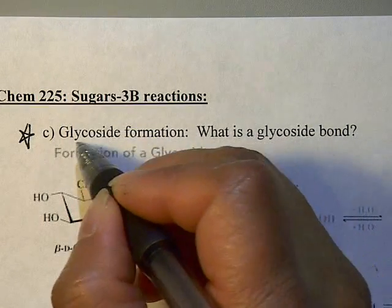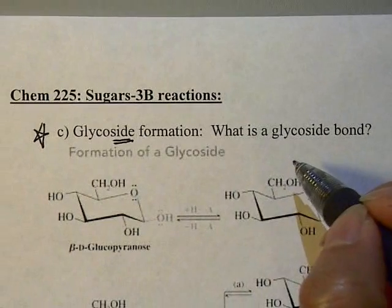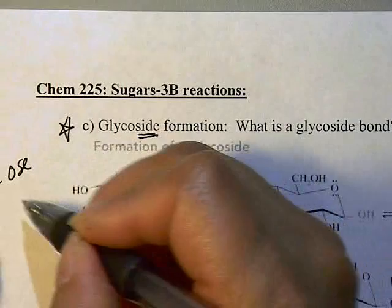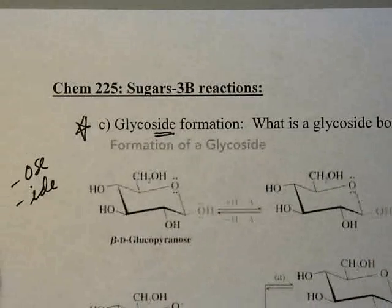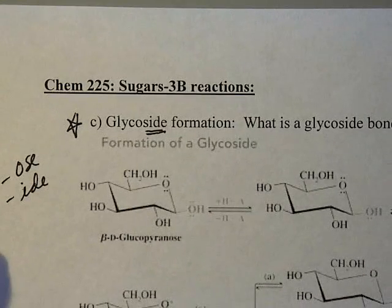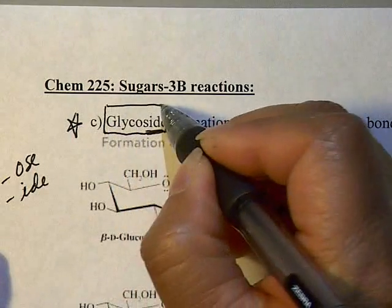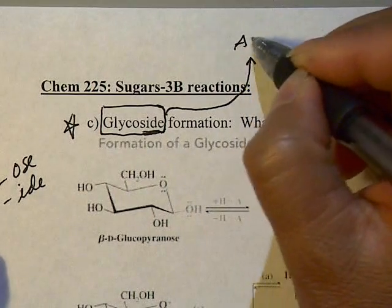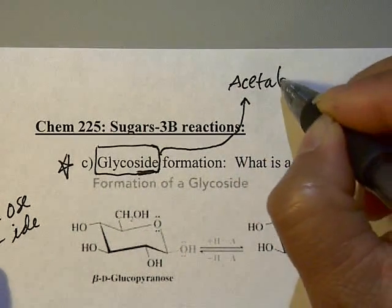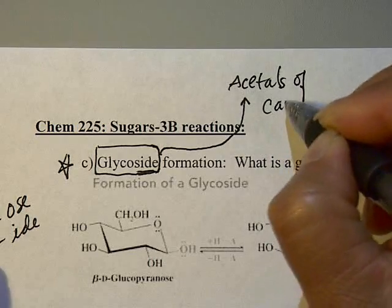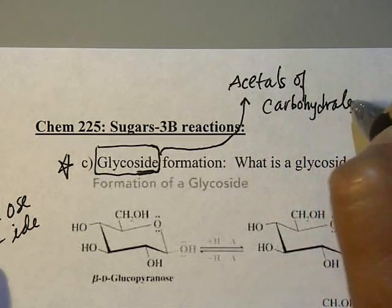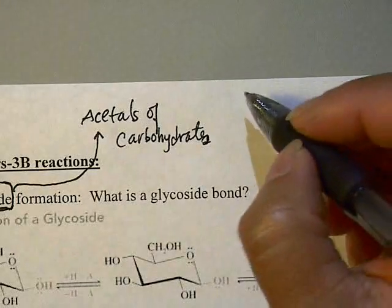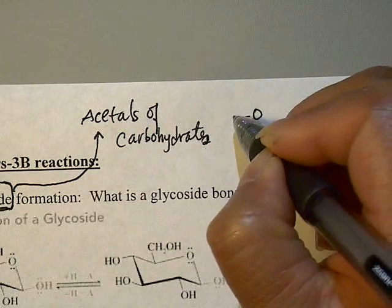Whenever you talk about a glycoside — notice the '-ide' ending, not '-ose' — you're referring to a specific compound. When you go from glucose (an '-ose') to a glycoside (an '-ide'), you are now talking about a glycoside. A glycoside is simply a fancy name for the acetal of a carbohydrate.